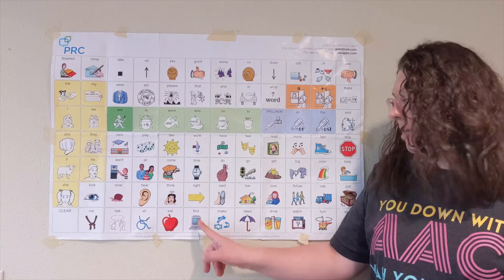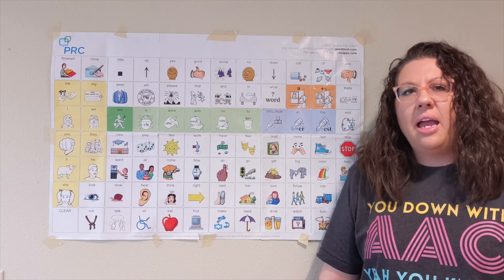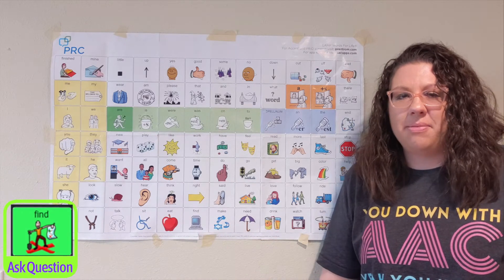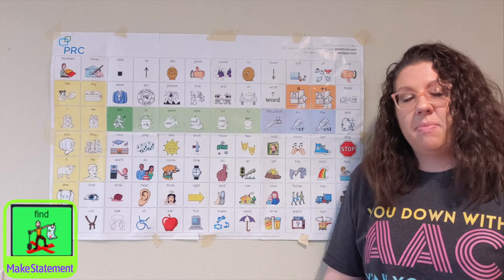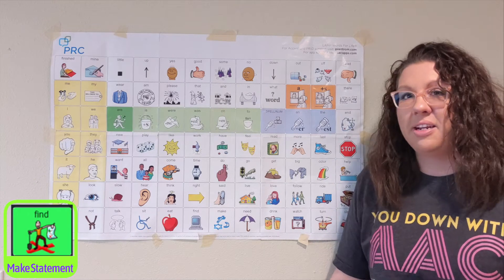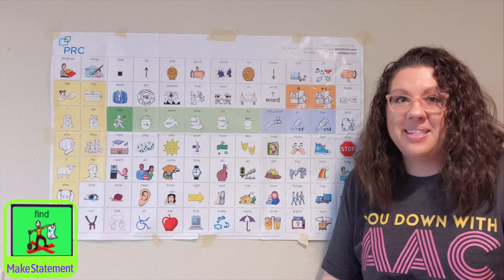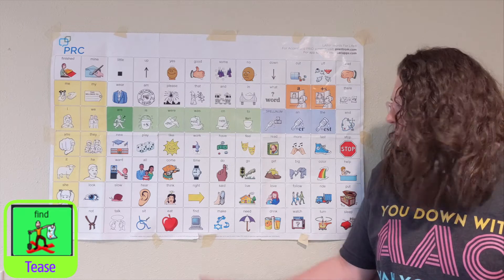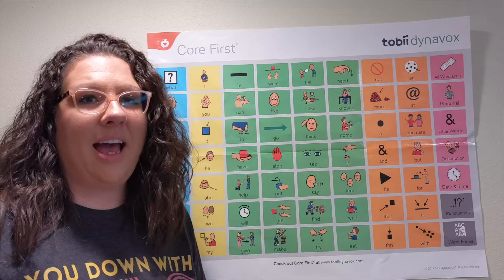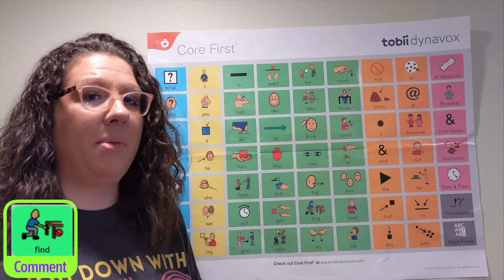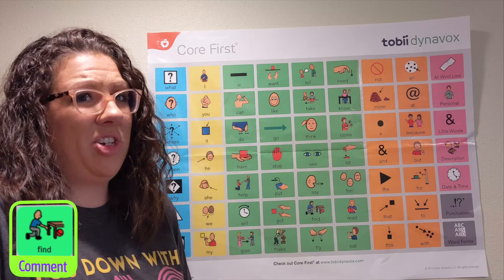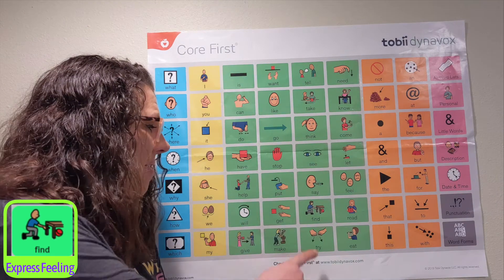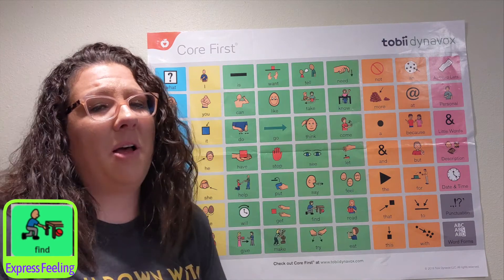Now let's use our word 'find' for different functions of communication. I could ask a question and say, 'Can you find my book, please?' I could use my word 'find' to make a statement and say, 'Let's keep reading and find out what happens next.' I could use my word 'find' while teasing and saying, 'You can't find me.' I could use my word 'find' to comment and say, 'I can't find my shoes.' We could use the word 'find' to help express our feelings and say, 'I find that hugs help calm me down.'